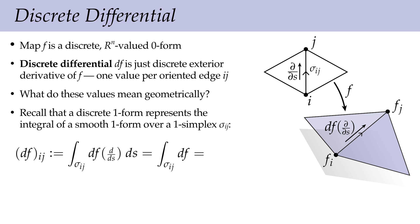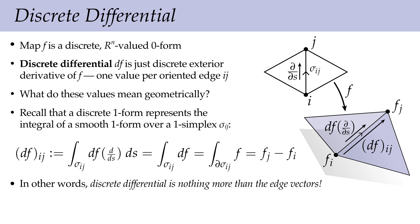Stokes' theorem tells us: integrating df along sigma_ij equals integrating f over the boundary of sigma_ij, which is just the two endpoints with opposite orientations. So the integral is simply fj minus fi. After all that sophisticated thinking, the discrete differential is just the edge vectors of the mesh. We could have skipped to that, but now we understand the differential geometric interpretation. Also, df_ij is anti-symmetric: if we reverse edge orientation from i to j versus j to i, the edge vector flips sign.